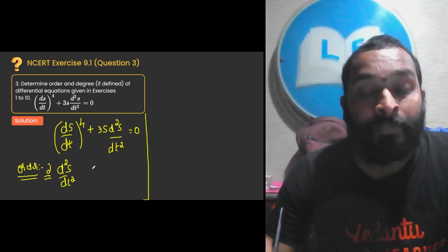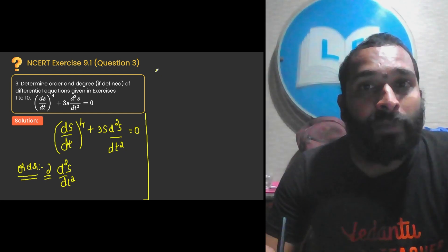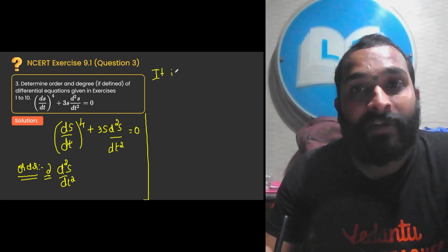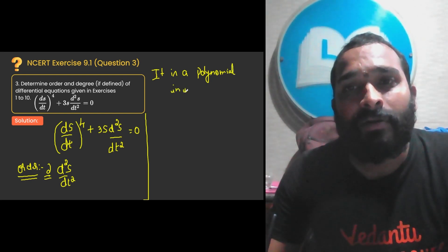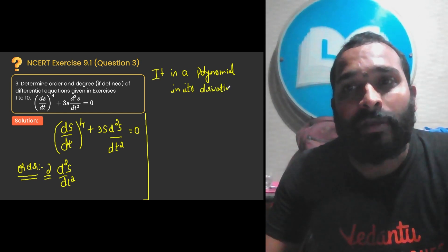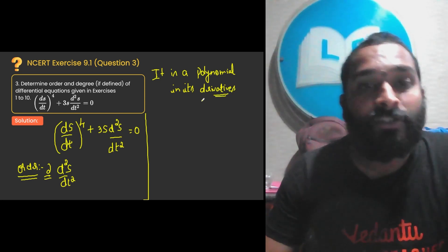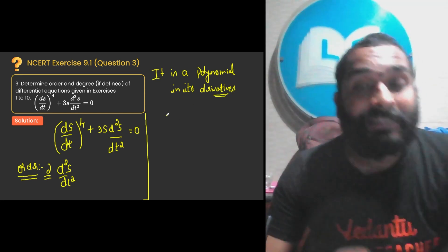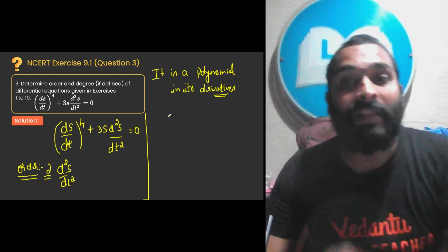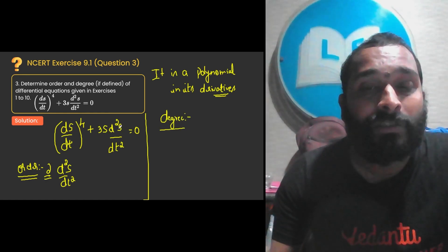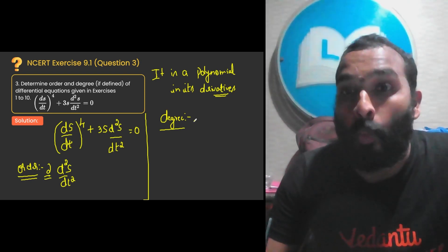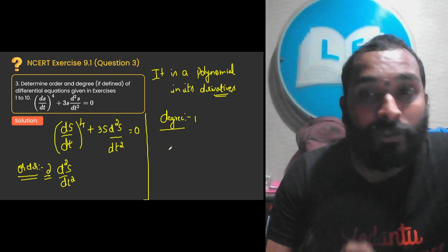So what is the order? Order is 2. And this is a polynomial in its derivatives. So in that case, what we can write: the highest power of the highest order derivative will be your degree. The highest derivative is d²s/dt². What is its power? 1. So order is 2, degree is 1. In this differential equation, order is 2, degree is 1.